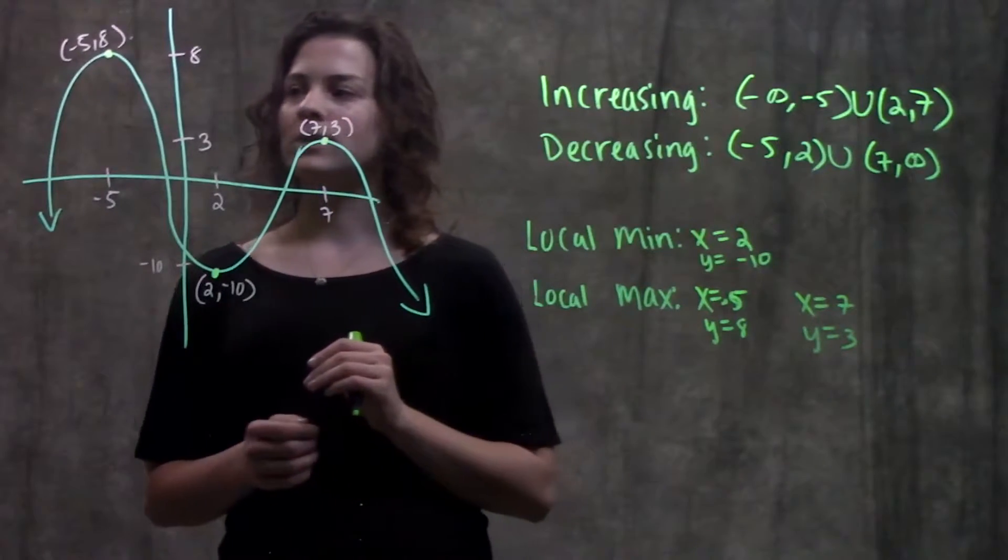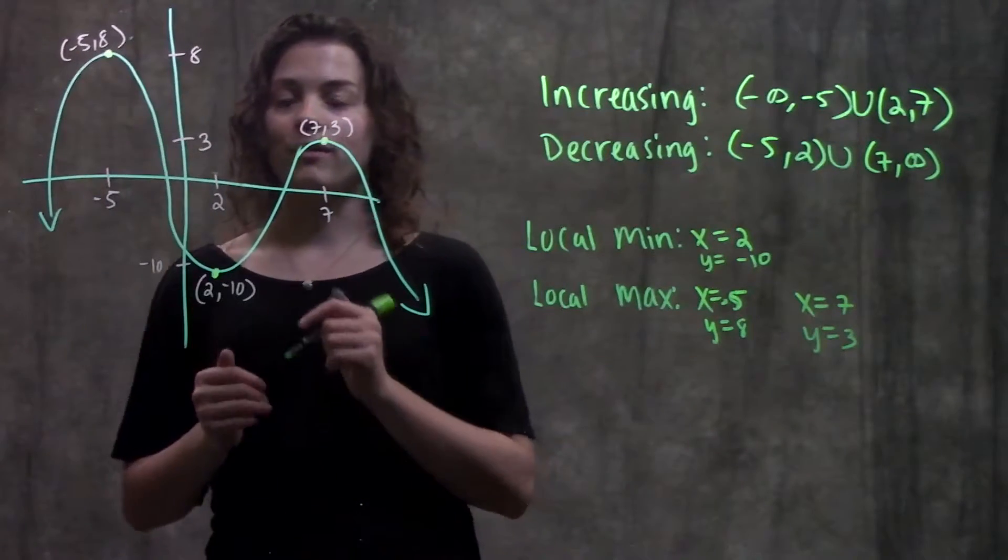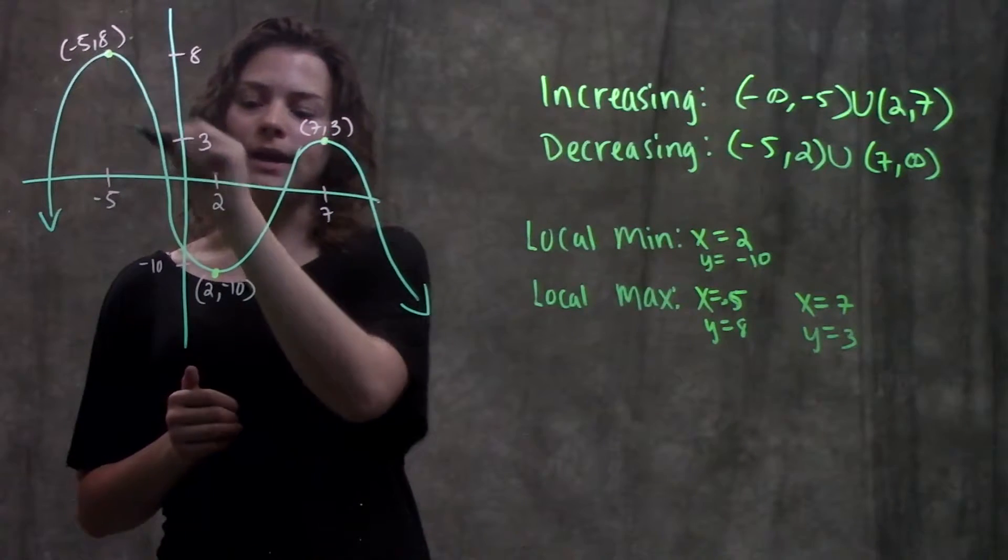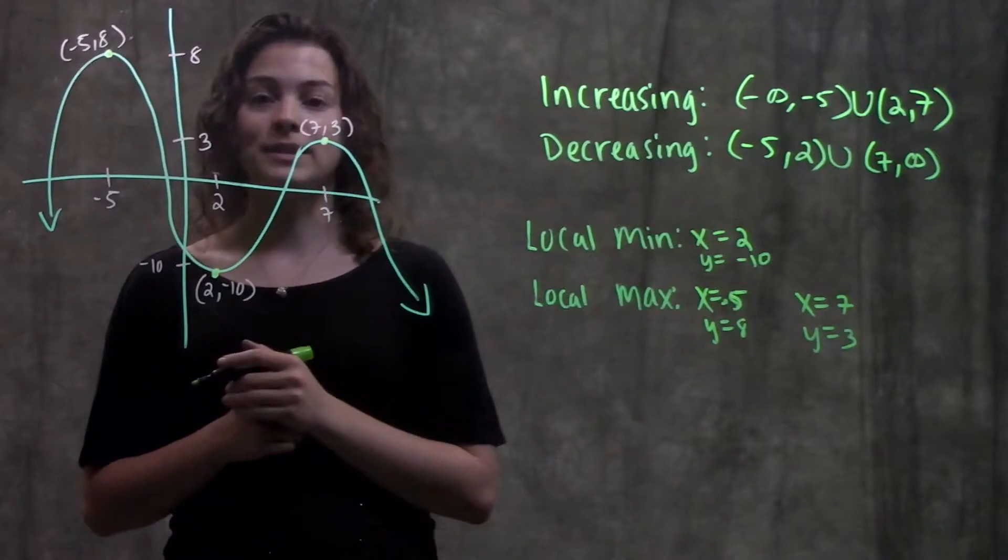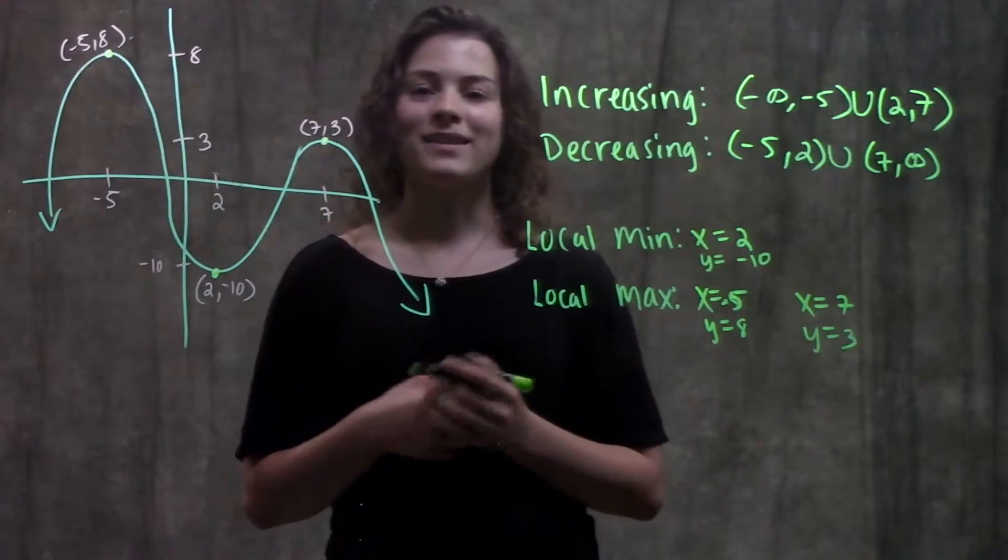To find our minimums and maximums, we just look to see wherever we have a curve. At the top of the hill, we'll have a max, and at the bottom, we'll have a min. Other than that, that's it for this problem.